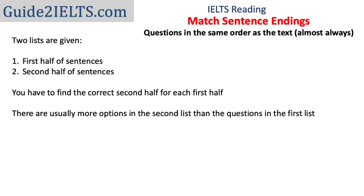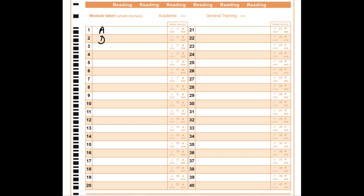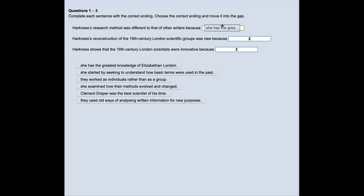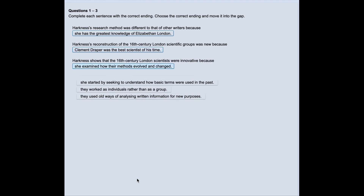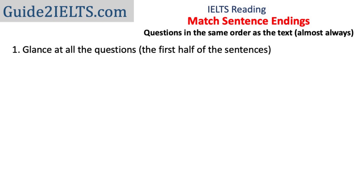The next question type is match sentence ending. You have a list with the first part of several sentences and another list with the endings of sentences, and you have to find the correct ending for each first part. The answers are typically in the same order as the information in the passage, although in some rare cases they may be slightly out of order. In pen and paper IELTS, you write the correct letter in your answer sheet; in computer delivered IELTS, you click on the correct ending and drag and drop it after the first part.